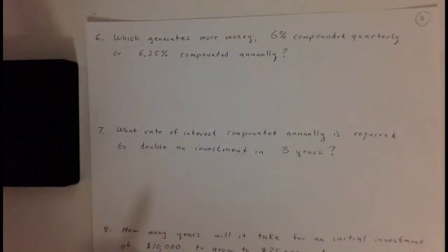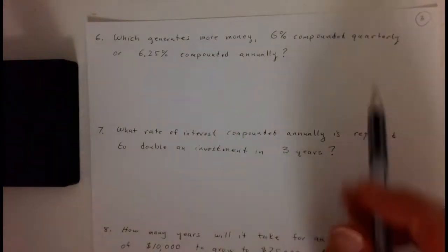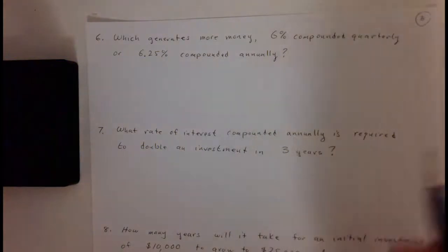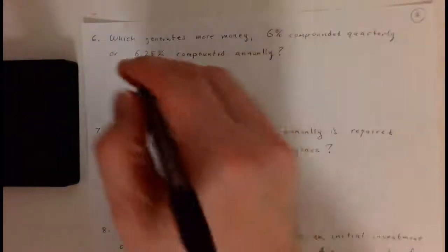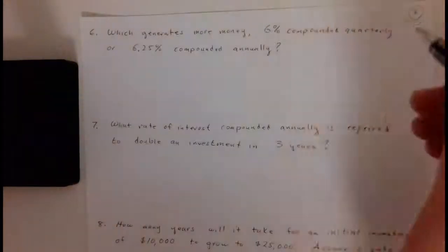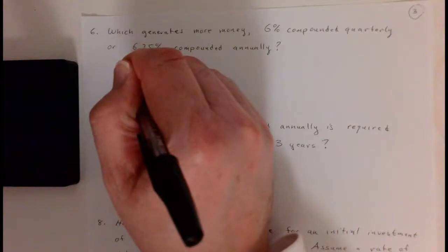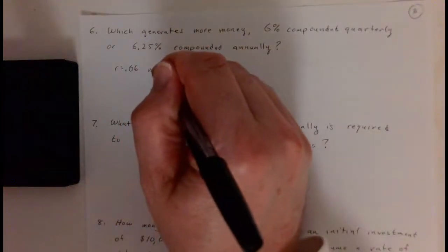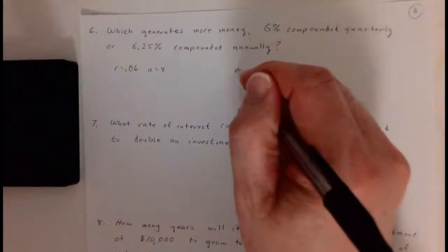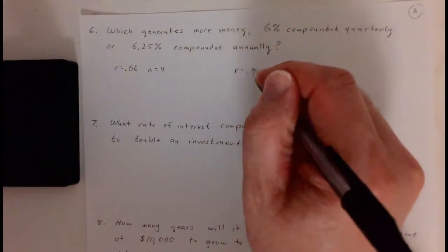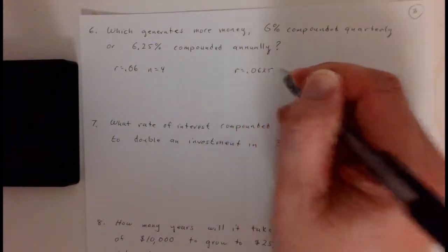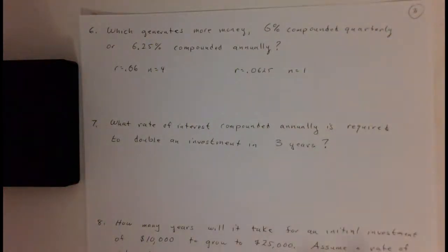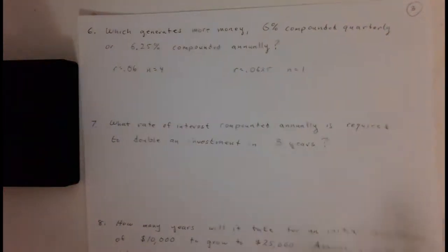I can show that once we write the formulas down. For six percent compounded quarterly, this means in the first scenario R is point zero six and N is four. In the second scenario, R is point zero six two five and N is one.